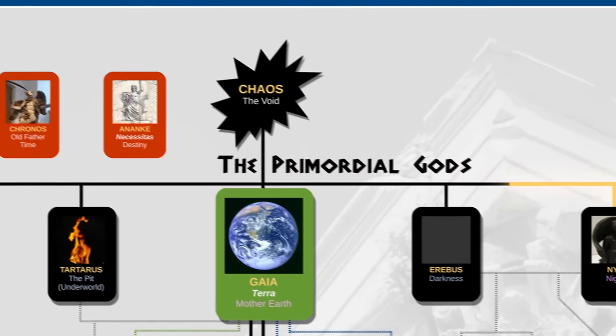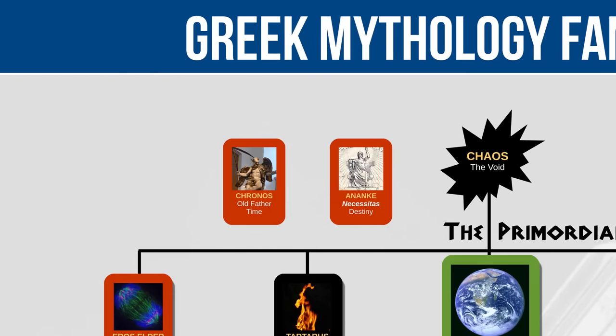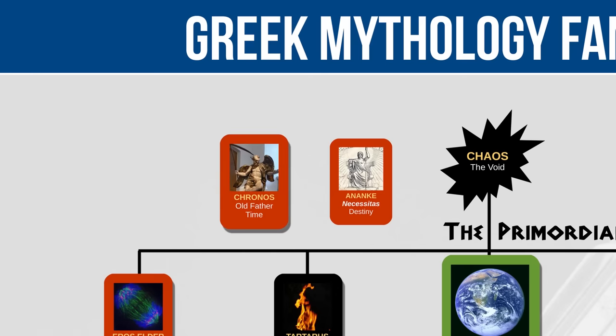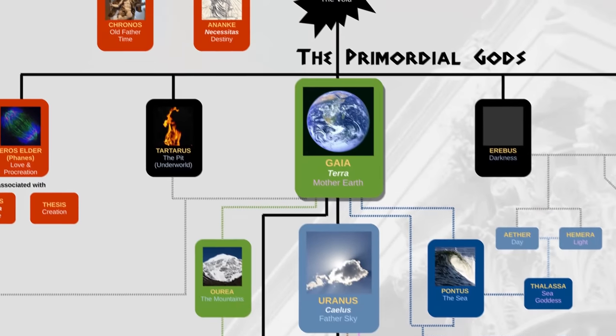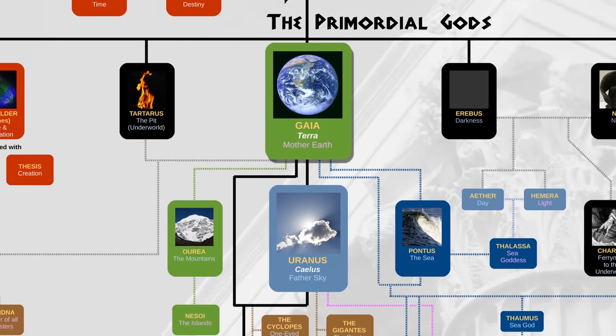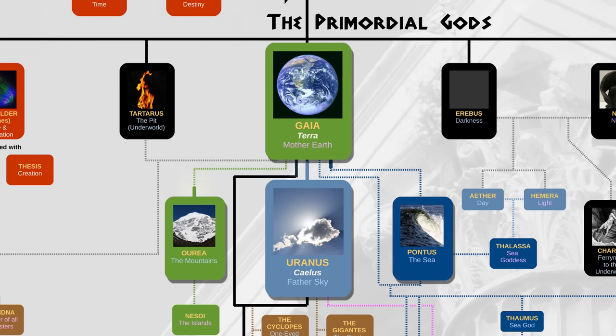There are two gods here at the top that don't really fit anywhere on the tree, being that they exist beyond space and time. There's Cronus — Old Father Time — and Ananke, the goddess of destiny. Don't confuse this Cronus, spelt with a CH, with the Titan named Cronus, spelt with a K or C, whom we'll meet later. So the tree really starts from Gaia. From Gaia came three gods: the mountains, the sky, and the sea, named Aurea, Uranus, and Pontus.